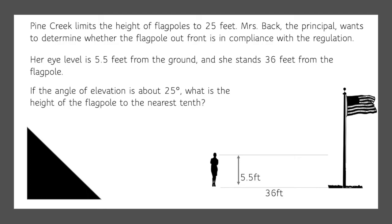If the angle of elevation is about 25 degrees, what's the height of the flagpole to the nearest tenth? Remember, we go from line of sight, and the angle of elevation from line of sight is 25 degrees. Now we're looking for the height of the flagpole, which is not part of our triangle, and trigonometry is only going to tell us this part of our triangle.